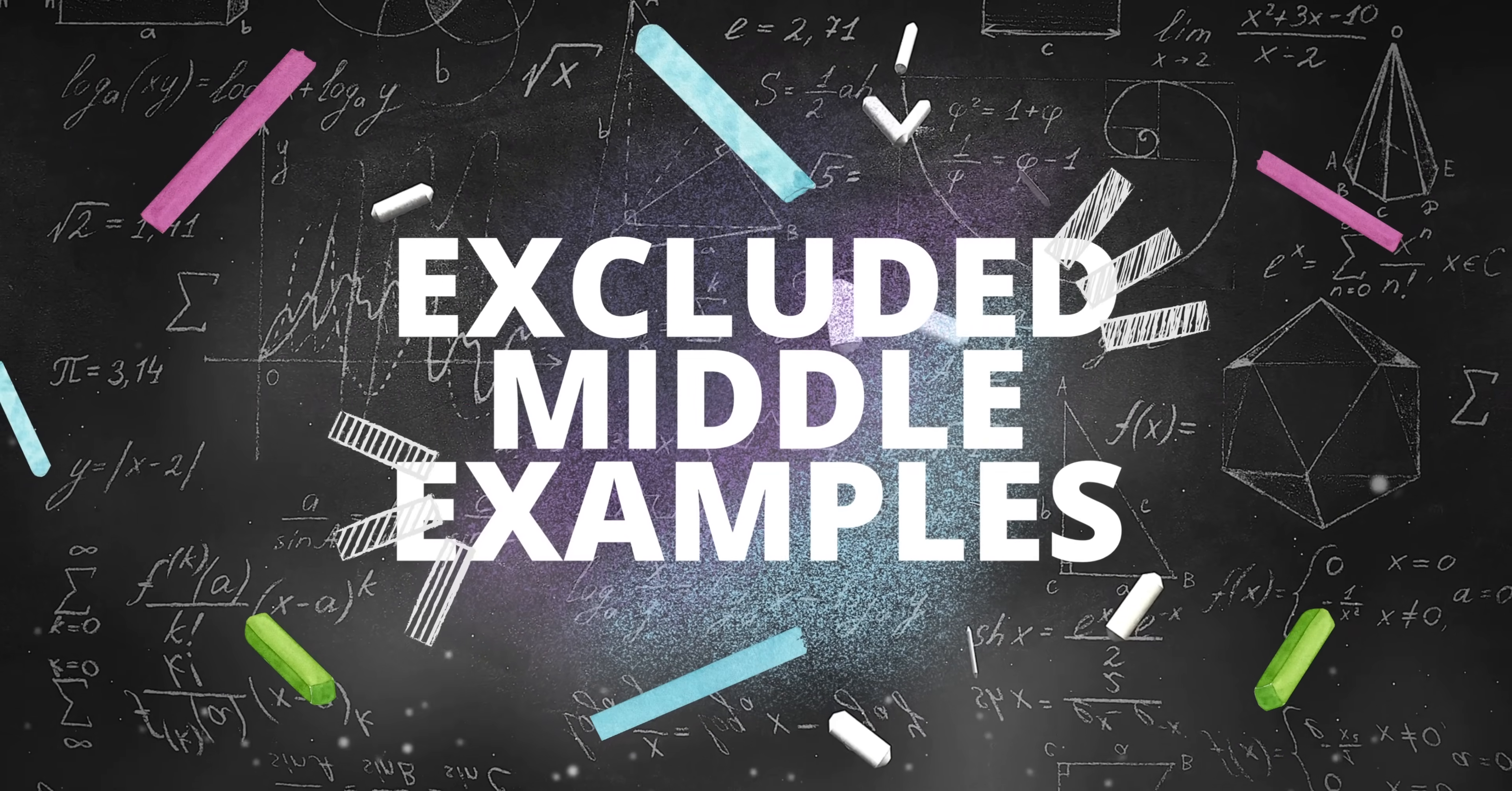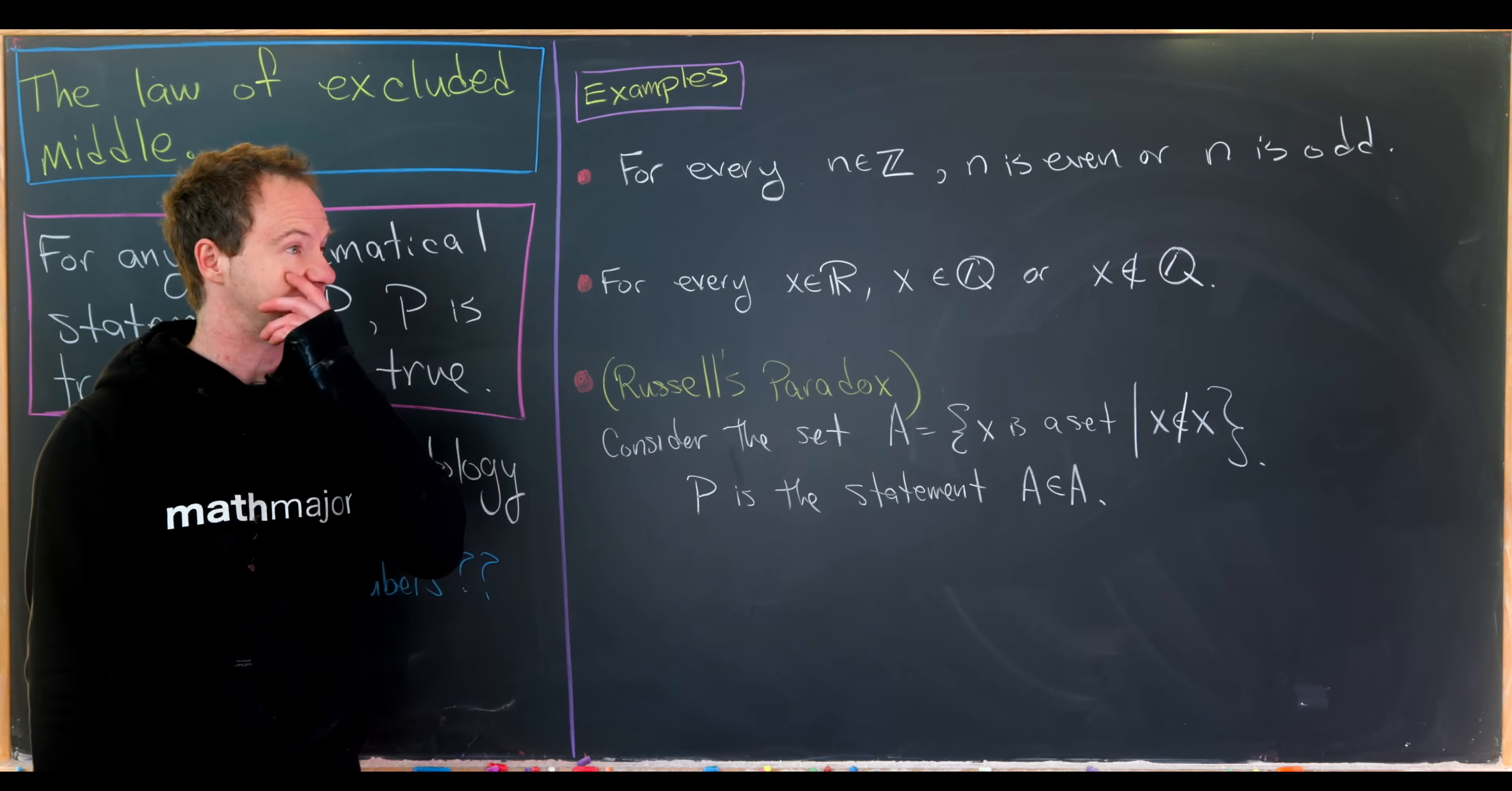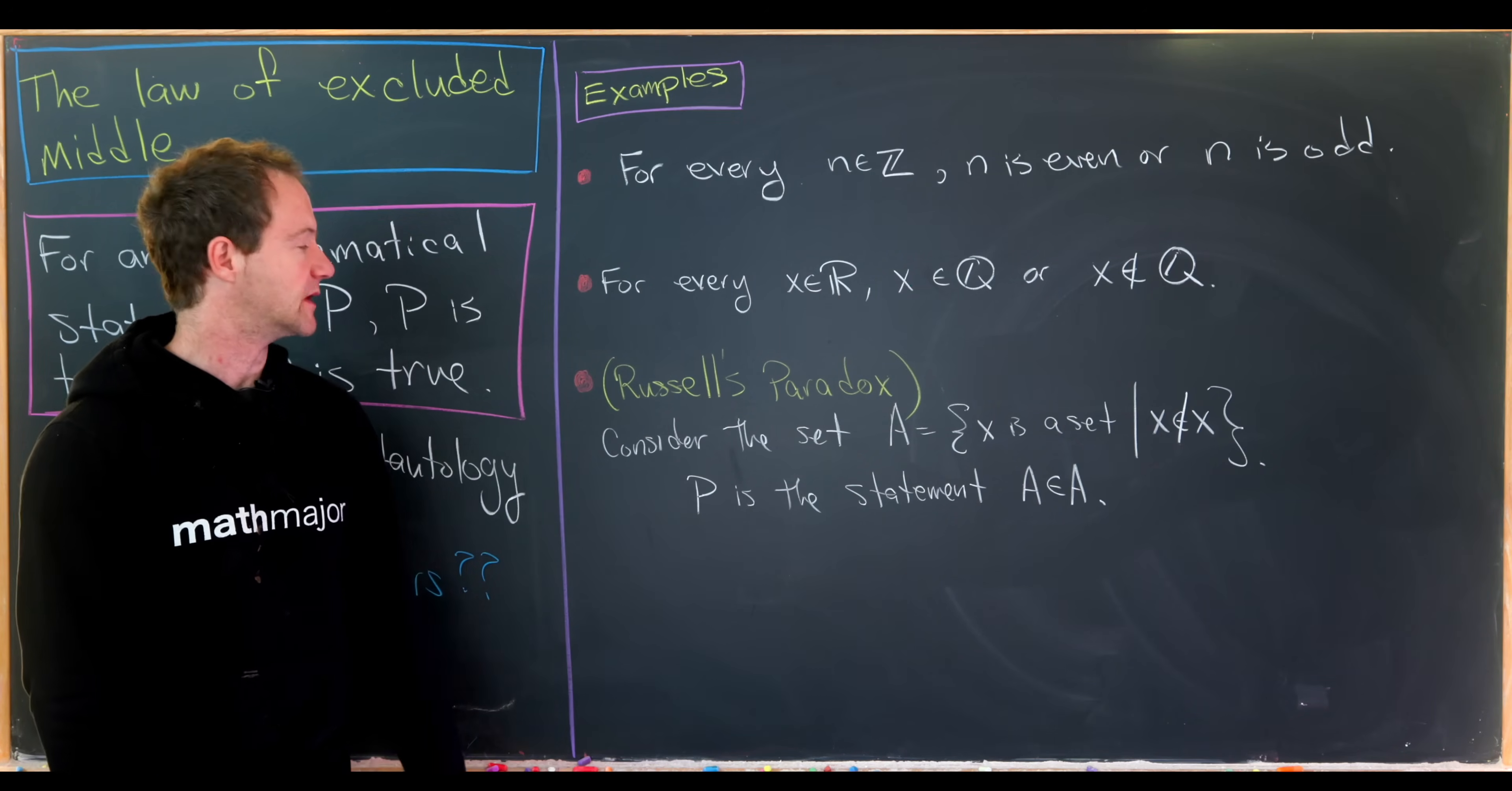So now let's look at two non-controversial examples and one that's a little bit sketchy. The first one says, for every integer n, n is even or n is odd. I don't think this is controversial because the evenness or the parity of an integer is defined by its divisibility or lack of divisibility by two. Every integer is either divisible by two, in which case it's called even, or it's not divisible by two, in which case it's called odd. No problem with this application of the law of excluded middle.